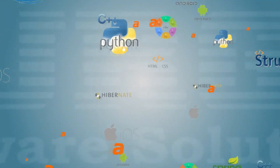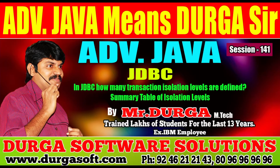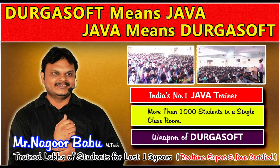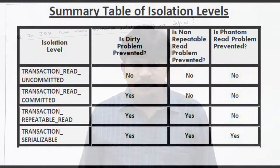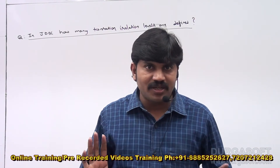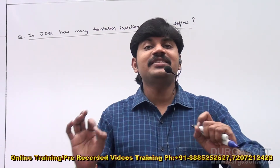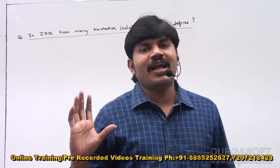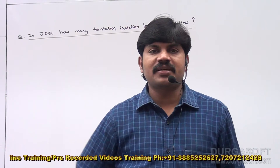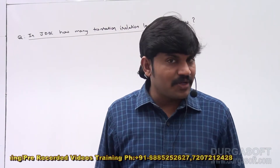Welcome to JDBC. Now I hope it is very clear about concurrency problems and isolation levels. My question is very important — observe carefully. In JDBC, how many isolation levels are there? As per our previous discussion, can you please tell how many transaction isolation levels are there in JDBC? How many are there?